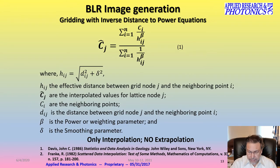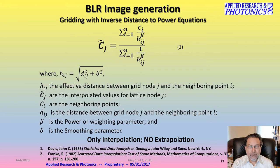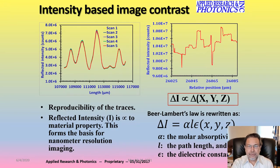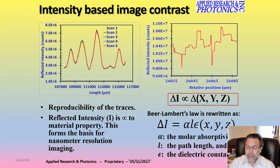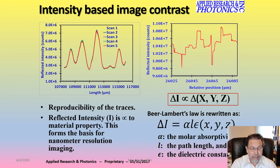The algorithm we use is what we call an inverse distance to power equation, used to generate the images. Two things are important: if we scan the same feature over and over again, we should get the same profile. We can rewrite the Beer-Lambert law in terms of intensity because the reflected intensity is material dependent, which lets us discriminate between materials and provides contrast generation from which the image is formed.